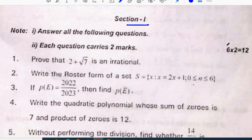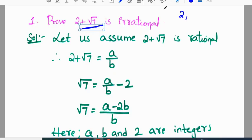Let's see what questions appear in section 1. Section 1, we have 6 questions, 2 marks each, 12 marks. Prove that 2 plus root 7 is an irrational number. Irrational number concept, 2 marks, 4 marks or 6 marks.